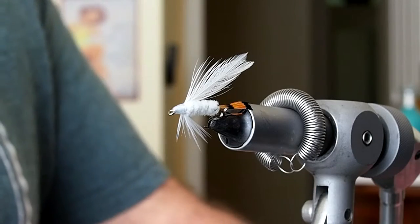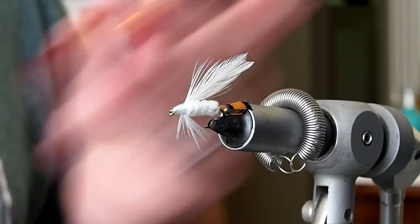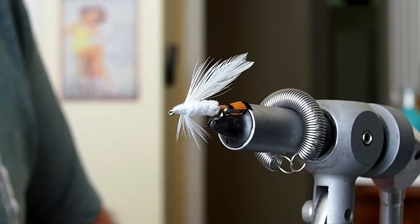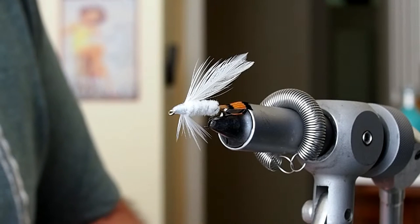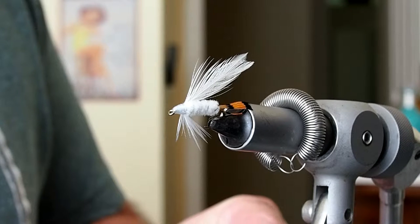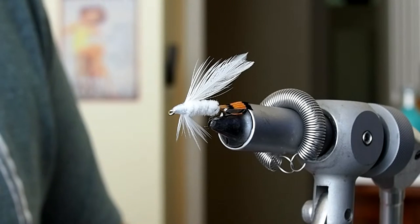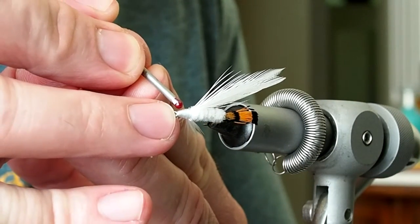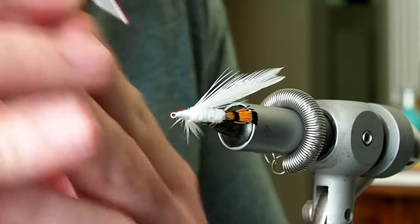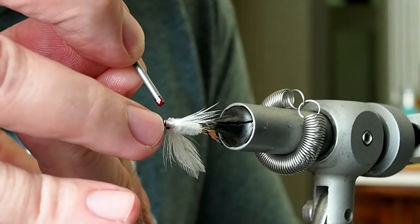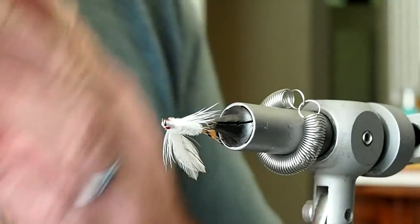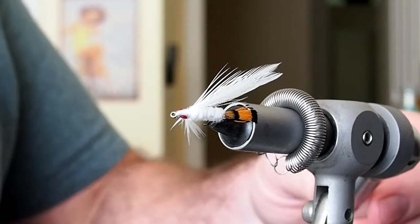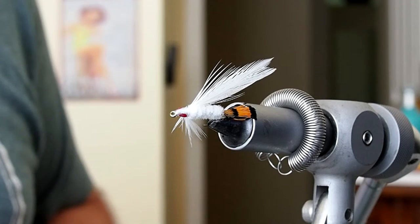The clear coat is finished drying. Next I'm going to paint on some red eyes. I'm just going to use some red nail polish and a small nail that I have the tip filed down on. I just want to touch the paint drop to the head without touching the nail to the head if at all possible. Now we need to let that dry and we'll hit it with one more coat of Sally Hansen's.